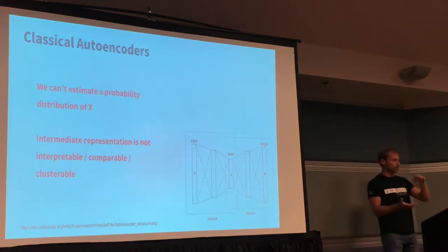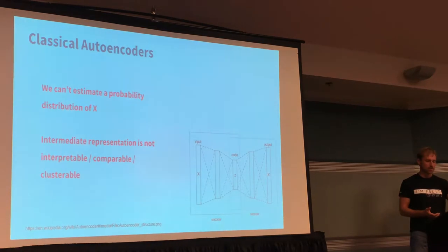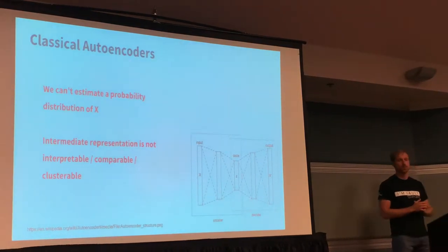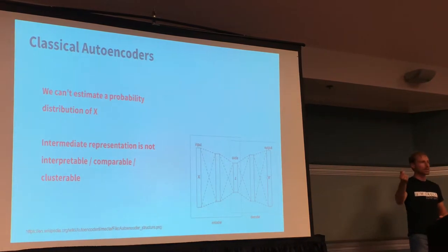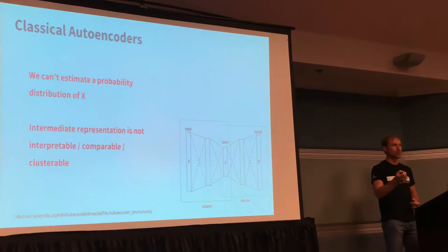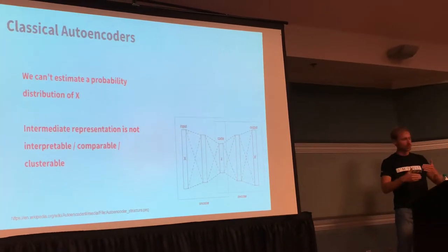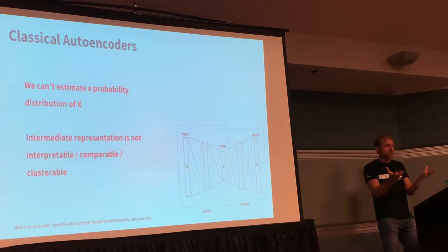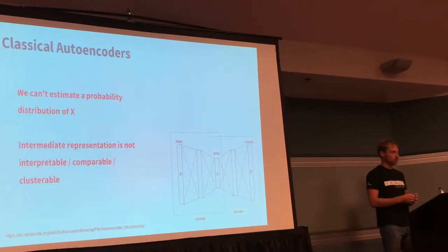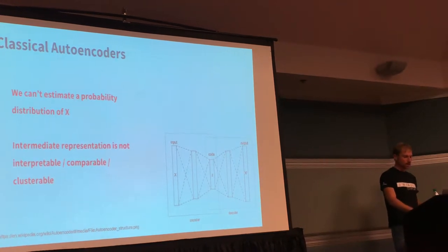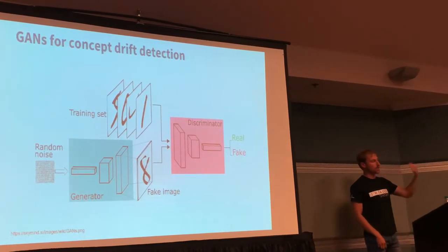There is a problem though: we can't estimate the probability distribution of x — that's the input. So we can say it's an anomaly but we can't explain why it's an anomaly, we can't interpret this, and we can't compare different distributions from training and production.